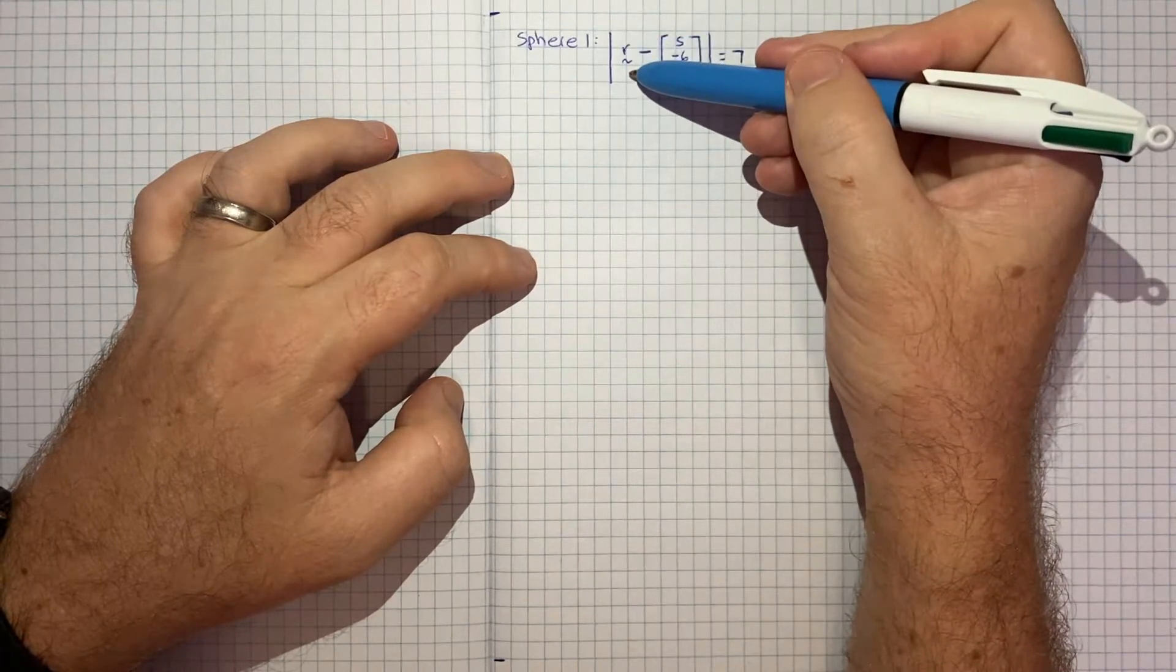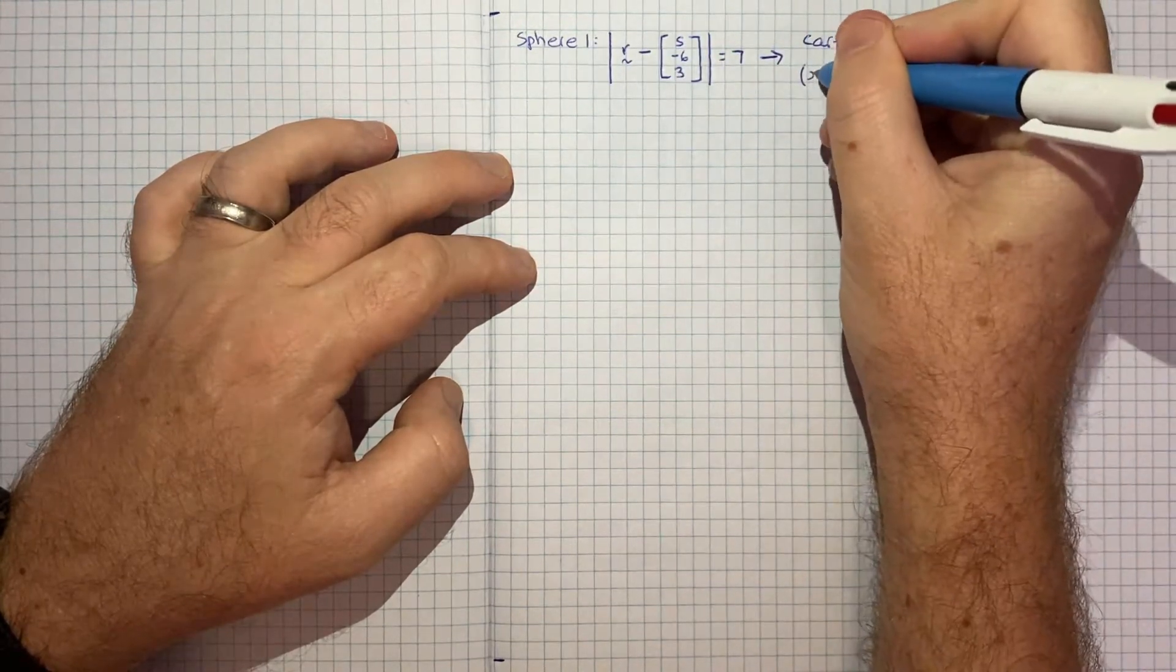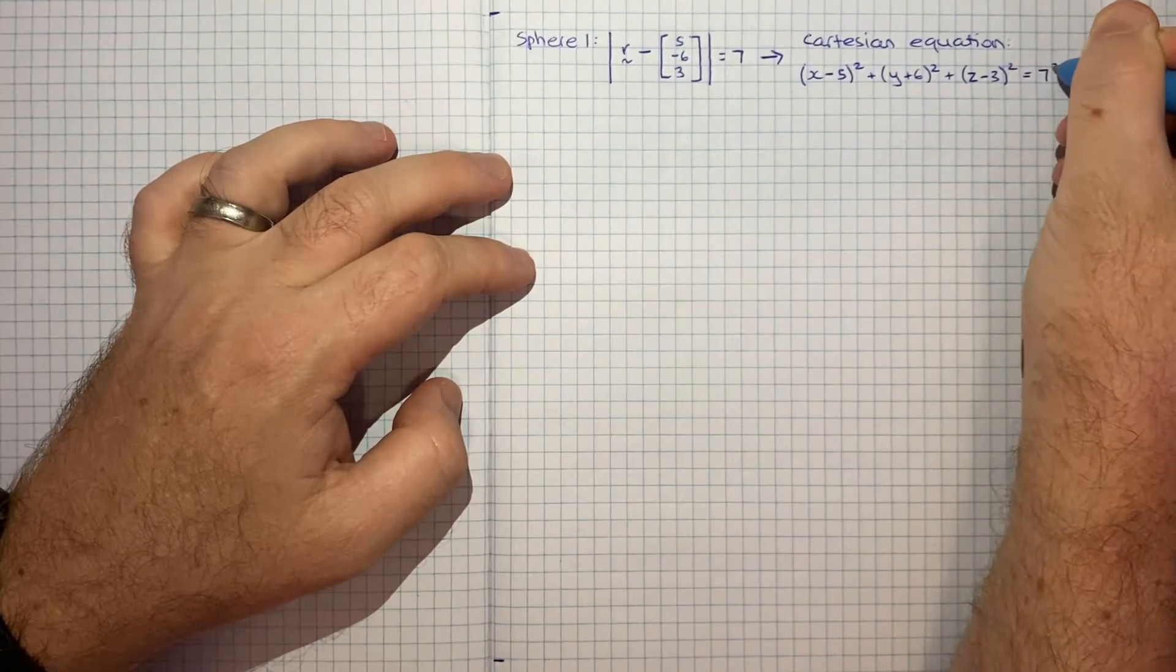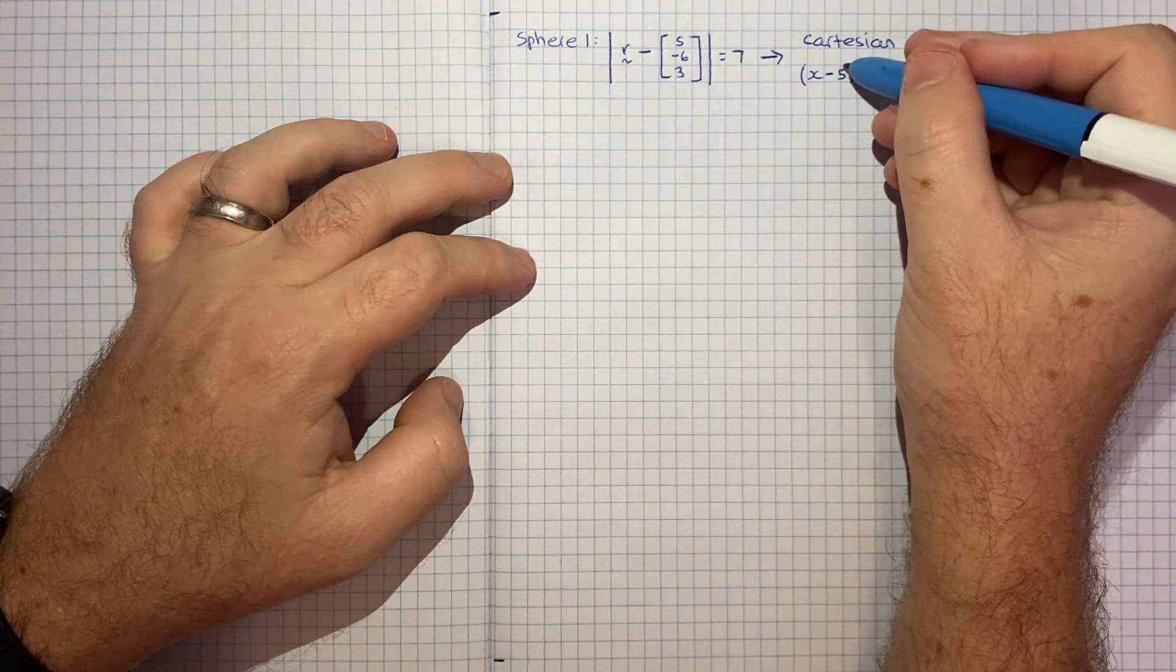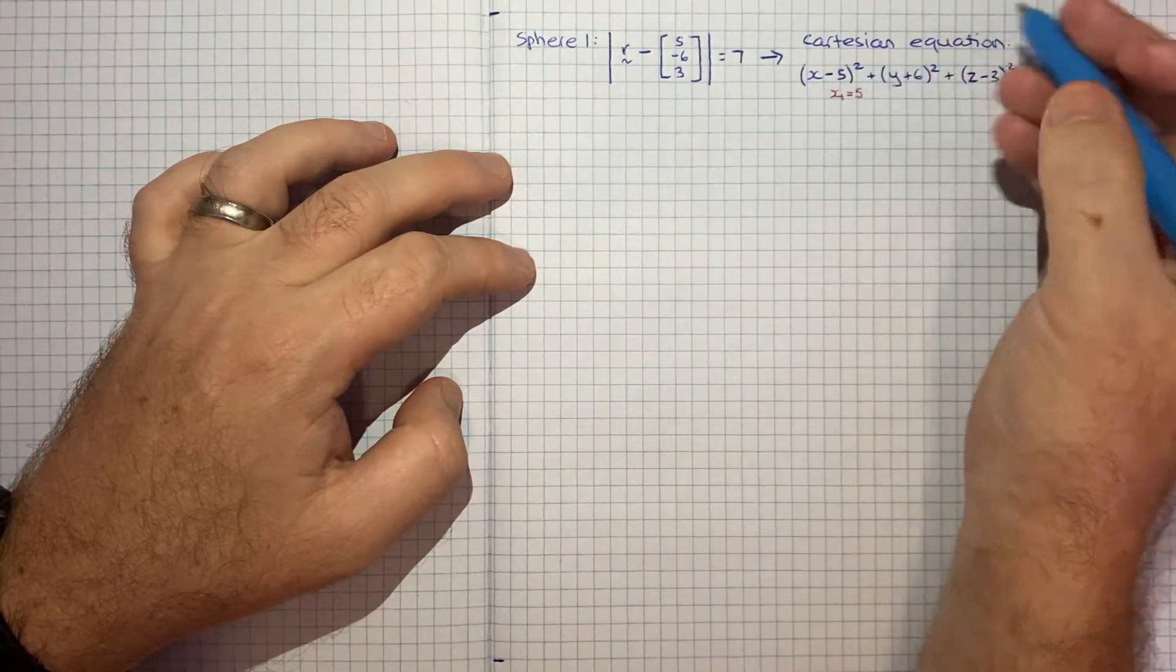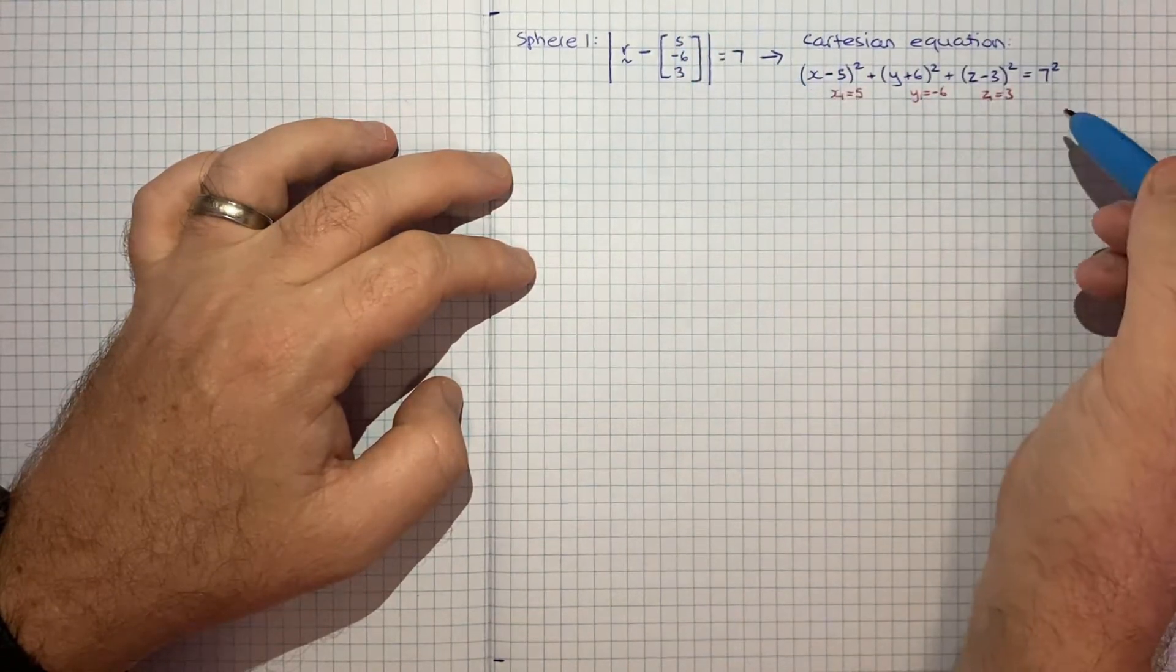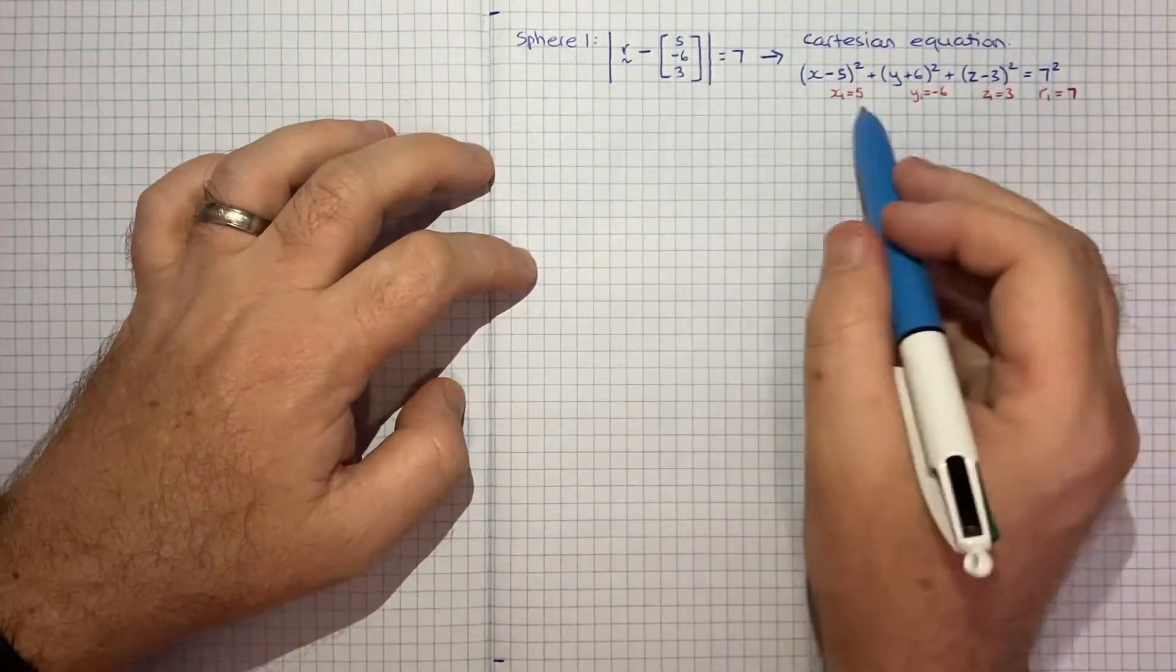The Cartesian equation would be: this r vector is essentially x, y, z. So we get (x - 5)² + (y + 6)² + (z - 3)² = 7². I'll annotate the coordinates of the center point here: x₁ = 5, y₁ = -6, z₁ = 3, and the radius r₁ = 7. We'll see why that's helpful later.